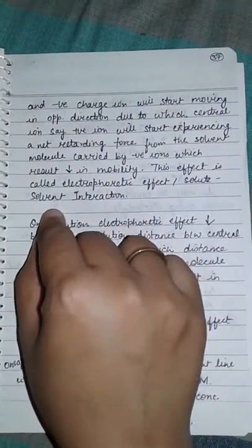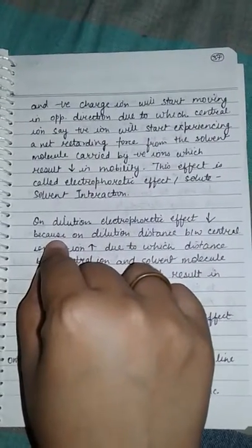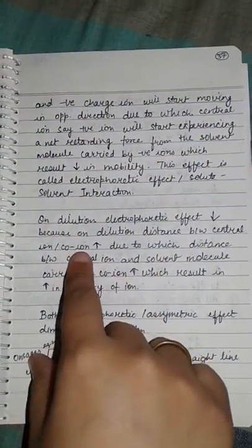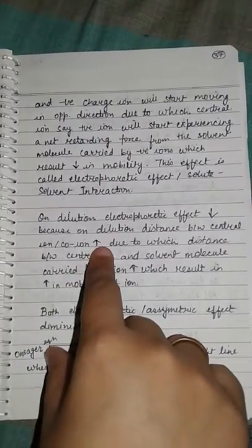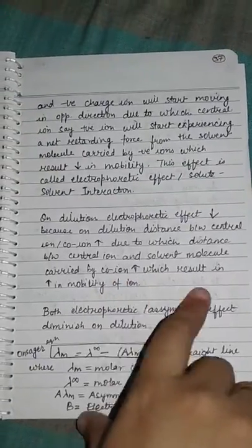On dilution, electrophoretic effect decreases because on dilution distance between central ion and co-ion increases, due to which the distance between central ion and solvent molecule carried by co-ion increases, which results in increase in mobility of ion.